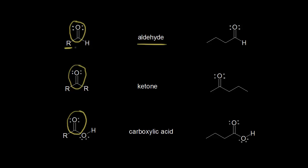An aldehyde has an R group on one side of the carbonyl and a hydrogen on the other side of the carbonyl. As an example, let's look at this compound. Here is our carbonyl, our carbon-oxygen double bond, and on this side we have a hydrogen directly bonded to this carbonyl carbon. On the left side we have this R group. So the carbonyl carbon gets a number one — it gets the lowest number possible. Then this carbon gets number two, this carbon number three, and this carbon number four. So we have a four-carbon aldehyde.